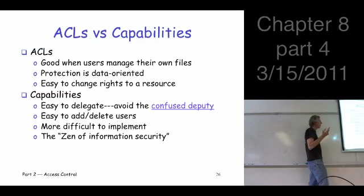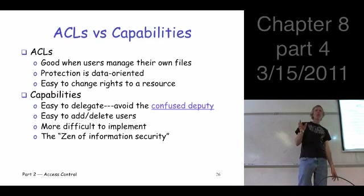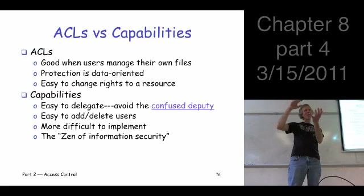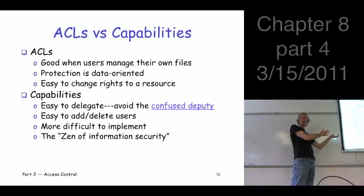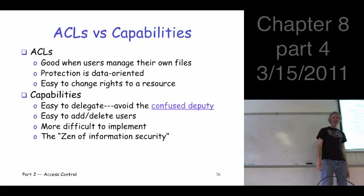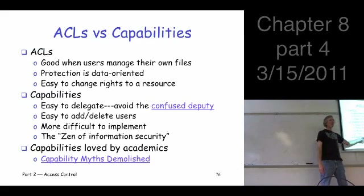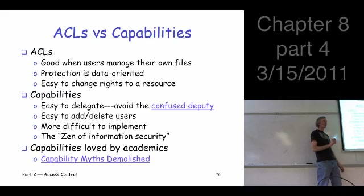Where are capabilities better? You can delegate more easily, like in the confused deputy scenario. Also, if users come and go — like at a university — and you delete a user: with access control lists you have to go to every single ACL and remove them. With capabilities, you just delete the user and their capabilities are gone. However, capabilities are actually much more complex to implement, which is why you don't really see them in practice too much. Almost everything you see in practice is access control lists.